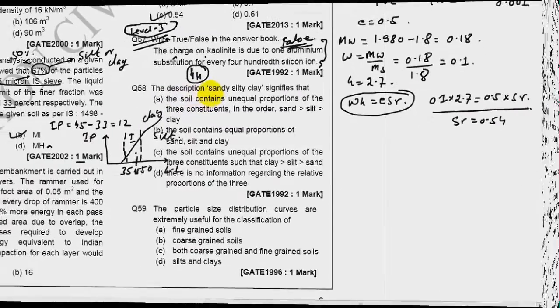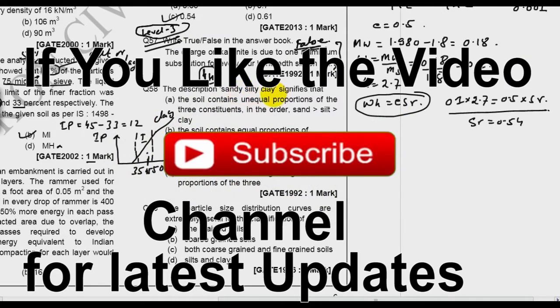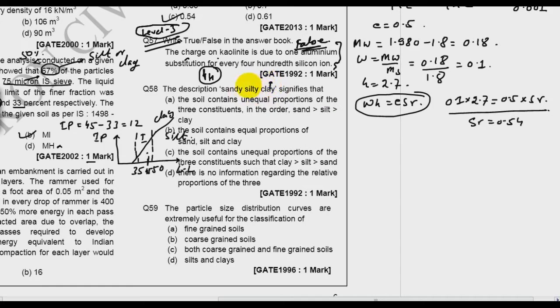The description sandy silty clay: what is the meaning? Maximum is clay, then silt, and then sand. So this is minimum and this is maximum. The soil contains unequal proportion of the three constituents such as clay, silt, and sand, so C is right. Whenever there is a nomenclature of sandy silty clay it means clay is the real soil, the rest are of less proportion. The first name is the least one and the second name is more than the first one.